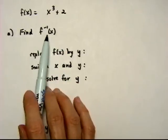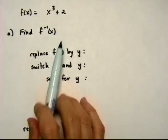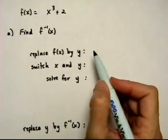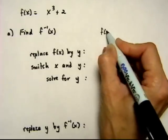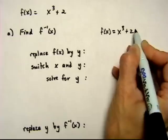Find the inverse of f of x is equal to x cubed plus 2. So we're going to start with f of x, x cubed plus 2.